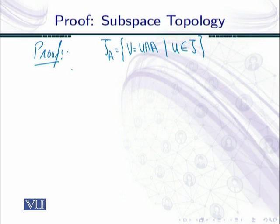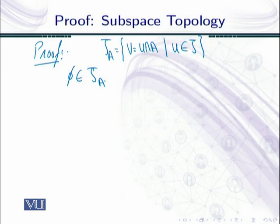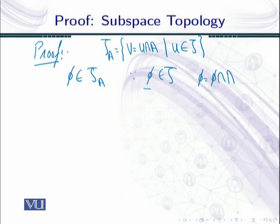First I have to show that φ belongs to τ_A. The reason is that I just need to find an element in the topology τ of X whose intersection with A gives φ. Since φ belongs to τ (the topology of X), I can write φ = φ∩A. So φ is an element of τ_A.